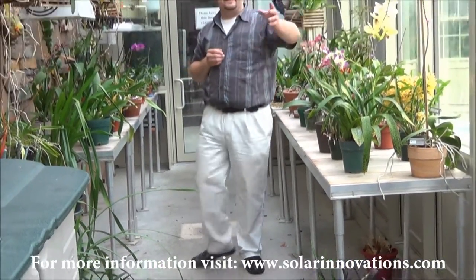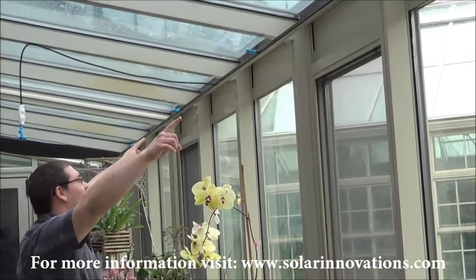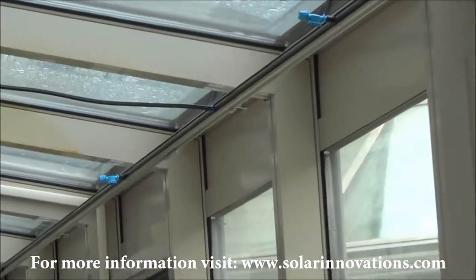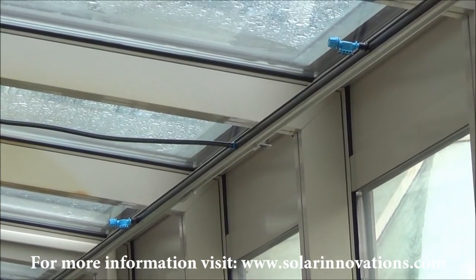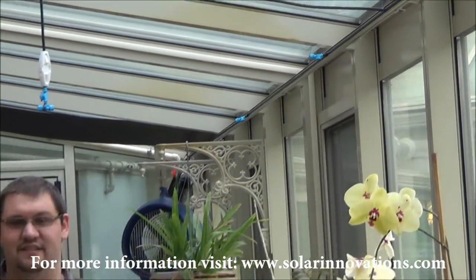Now if you'll go back up and look at the eave here, you can see that we're basically showing one fogging head about every 48 inches. We can increase or decrease that depending upon the amount of humidity you need to maintain inside your greenhouse.